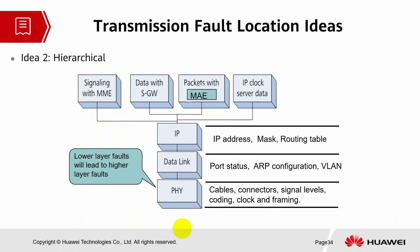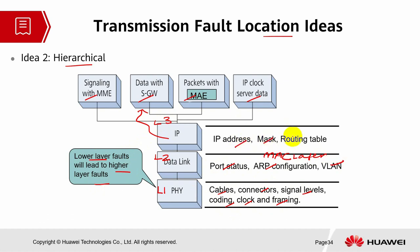The second idea is hierarchical fault location. This checks signaling with MME, data with Serving Gateway, packets with MME, and IP clock server data. Lower layer faults at Layer 1 and Layer 2 lead to higher layer faults. Layer 1 issues may involve wrong cabling, connectors, signal level, coding, clock, or framing. Layer 2 issues include port status, ARP configuration, MAC layer, and VLAN. IP layer issues may involve wrong IP address configuration, subnet mask, or routing table — leading to higher-layer signaling and data faults.